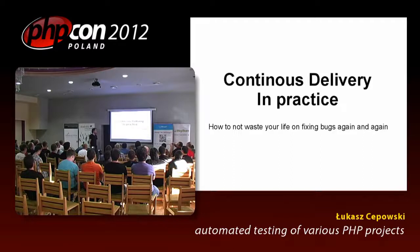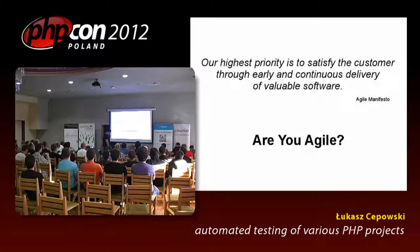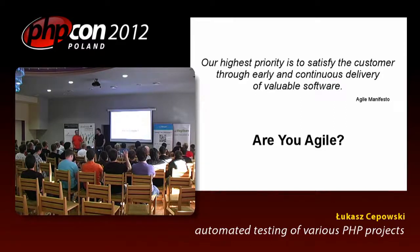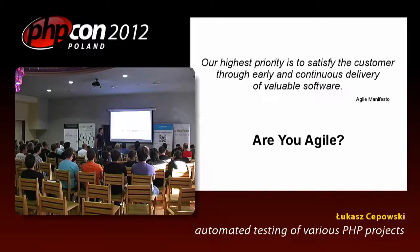So the real topic of this presentation is continuous delivery in practice — how to not waste your life fixing it back together again. How many of you are working in an Agile environment? And do you know about the Agile Manifesto? The first line of the Agile Manifesto says: our highest priority is to satisfy the customer through early and continuous delivery of valuable software. I will try to show what that actually means.